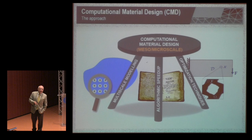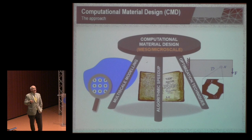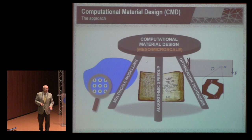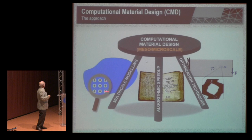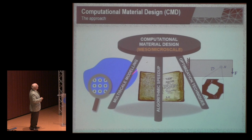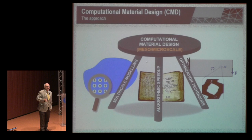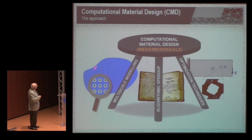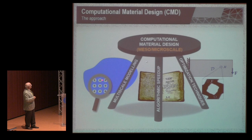Our approach to computational material design is sketched here as a three-legged scheme. We are targeting the design at meso scales — not atomic or molecular scales, but scales separated from the macroscopic part scale that can be manufactured with special techniques. One leg is multi-scale modeling: we use computational techniques to represent the mechanical behavior of the macrostructure in terms of the design and specific properties of the microstructure by homogenization.